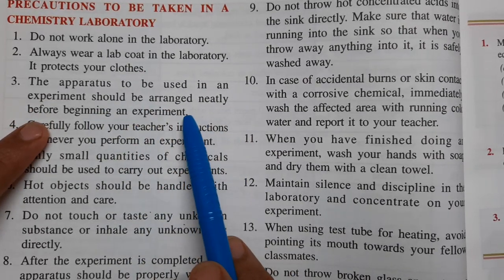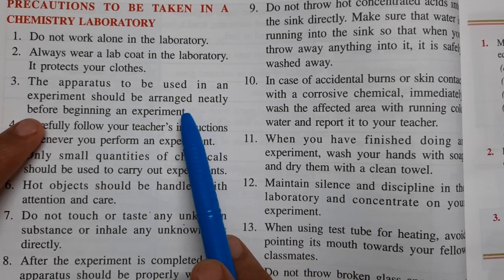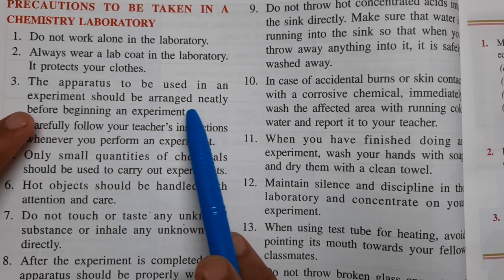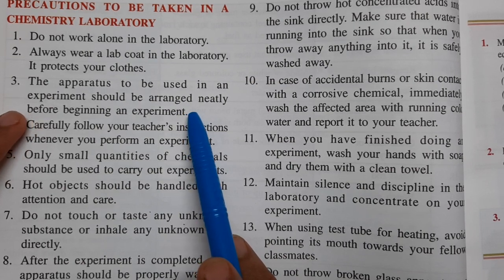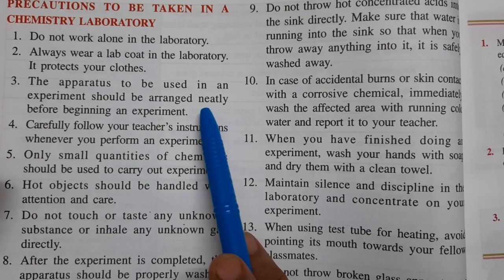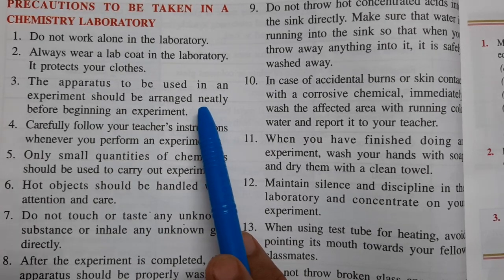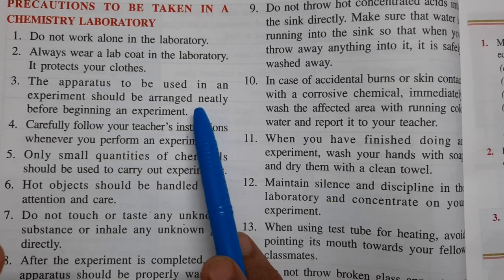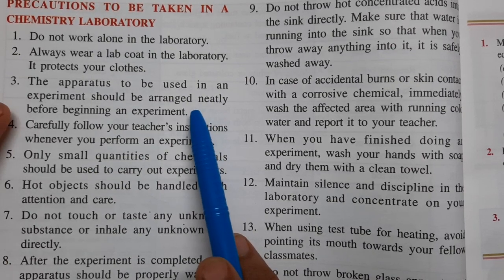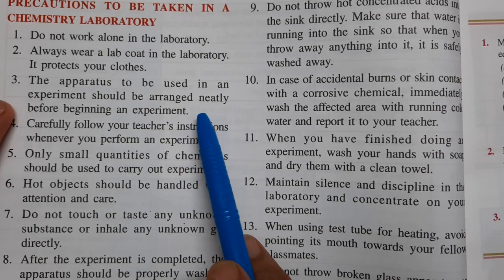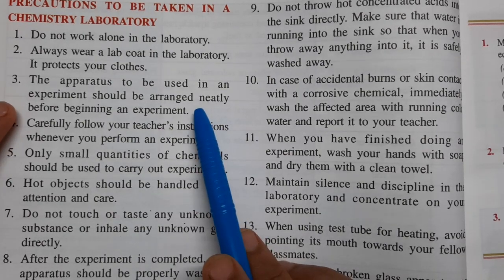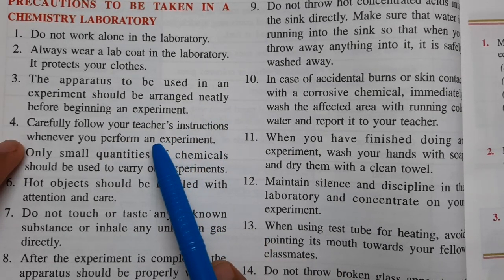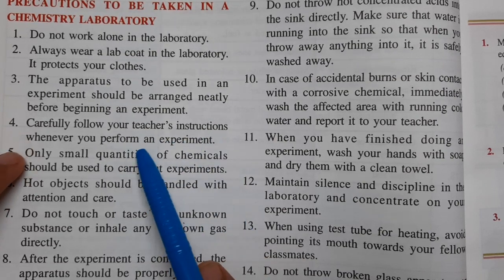Third: apparatus to be used in an experiment should be arranged neatly before beginning the experiment. Whenever we are doing a chemical reaction and need to use apparatus, we need to make it clean and arrange it properly first, and then we can do the experiment. It is always important to arrange everything before starting work.